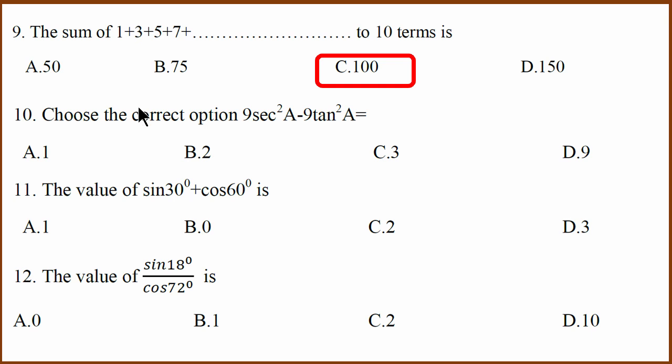10th to 12th question, trigonometry questions. Very standard questions. The first question is 9 secant square minus 9 tan square. That can be written as 9 times secant square minus tan square. Secant square equals 1 plus tan square, which means secant square minus tan square becomes 1. Therefore, 9 multiplied by 1 is 9.